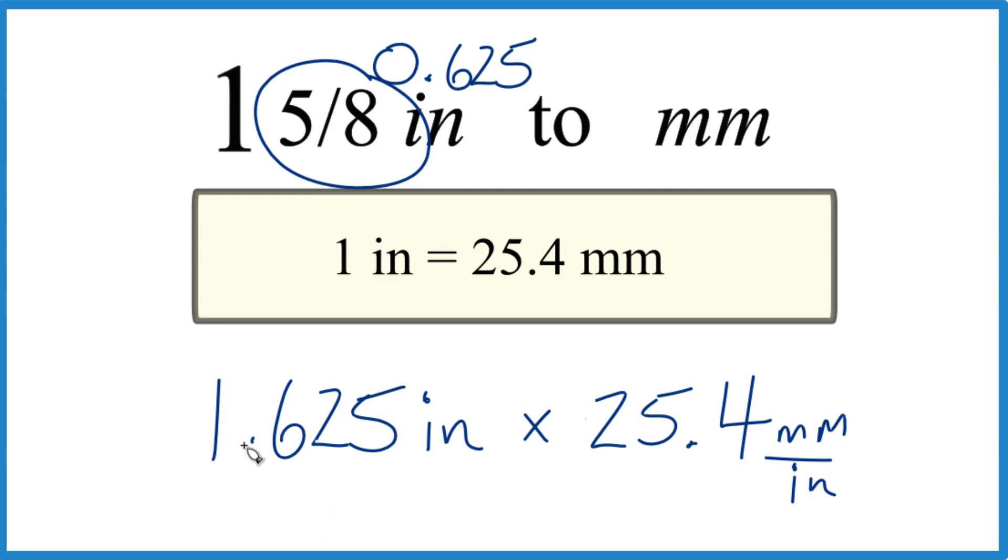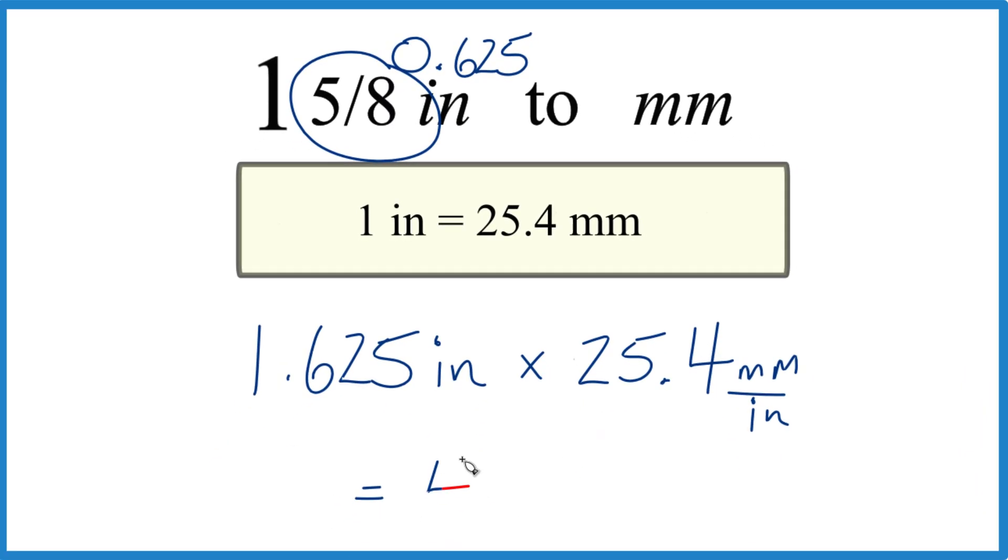So when you multiply 1.625 times 25.4, you get 41.275. I'm going to call it 41.26. Inches on the top and bottom cancel out.